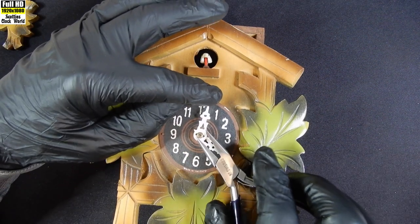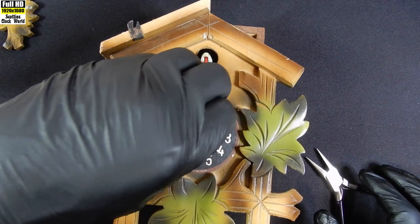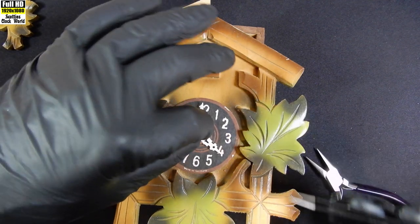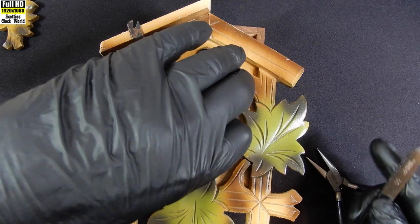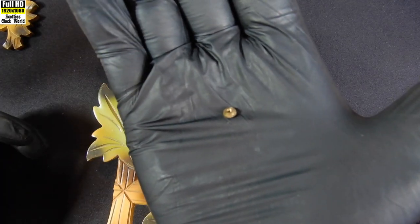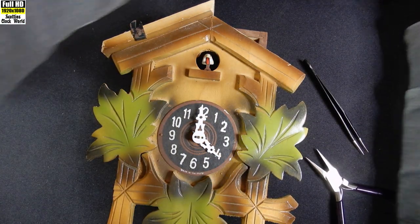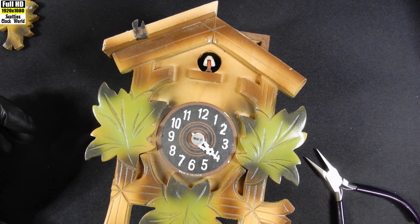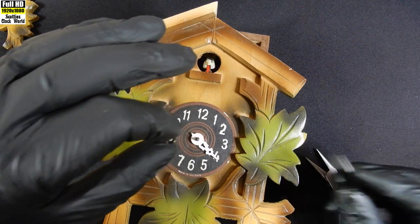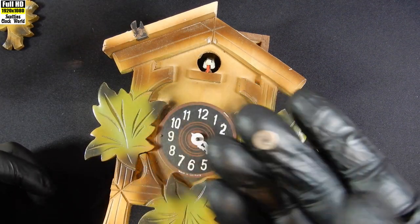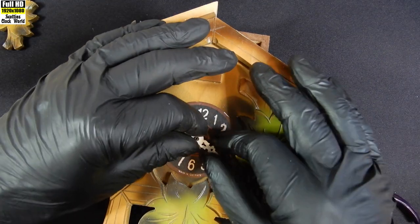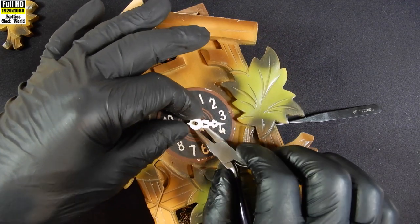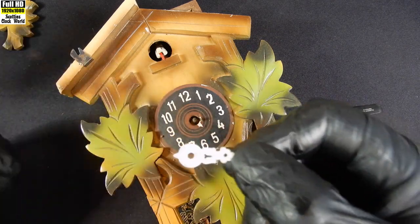We'll take the hands off, being very careful because they're plastic and we don't want to break them. Take that little nut off first. It's a nut that holds the hands on. Put that in the dish. Take the minute hand off. Take the spacer off, which is that piece there. Then very carefully hold the movement there and wiggle off the hour hand. That is very loose on there.